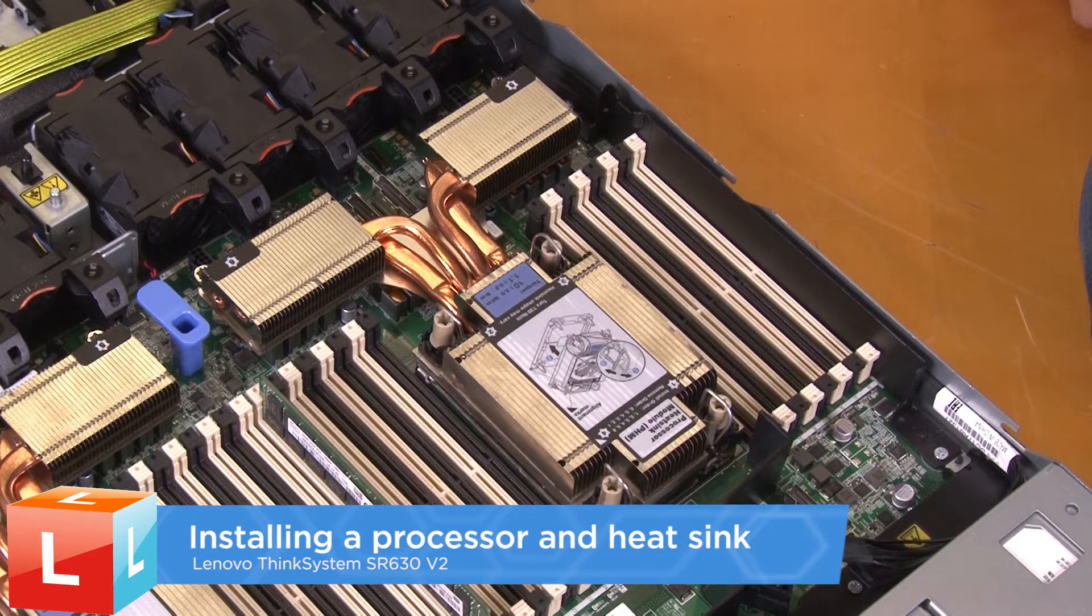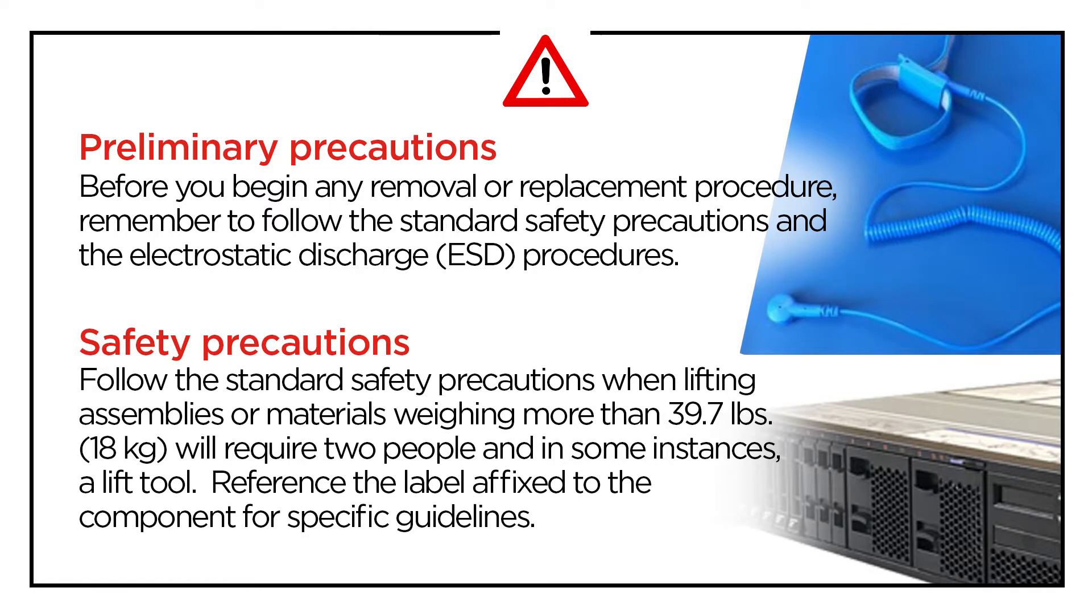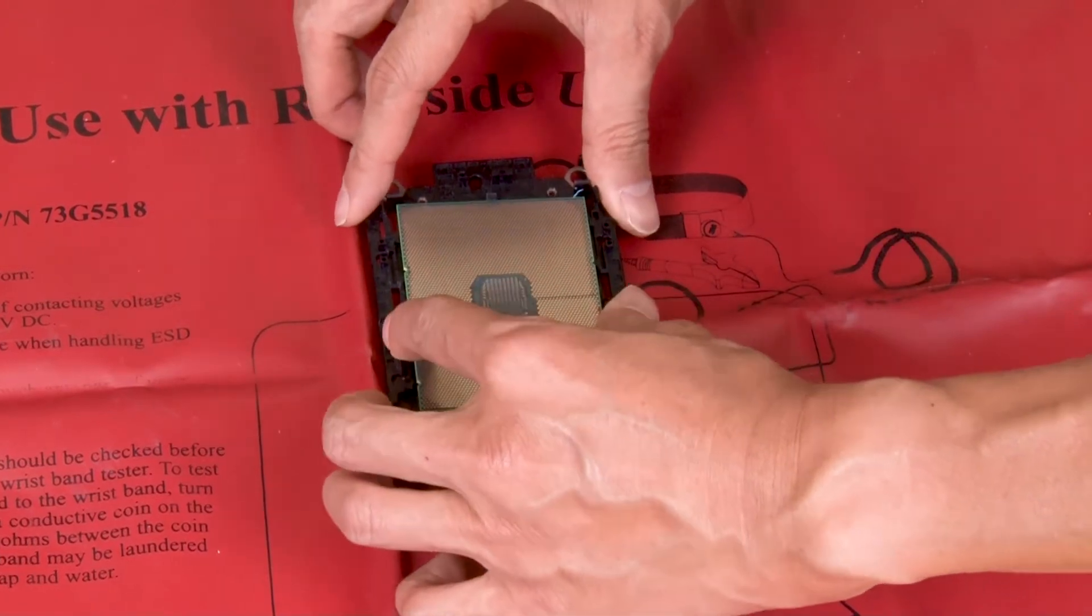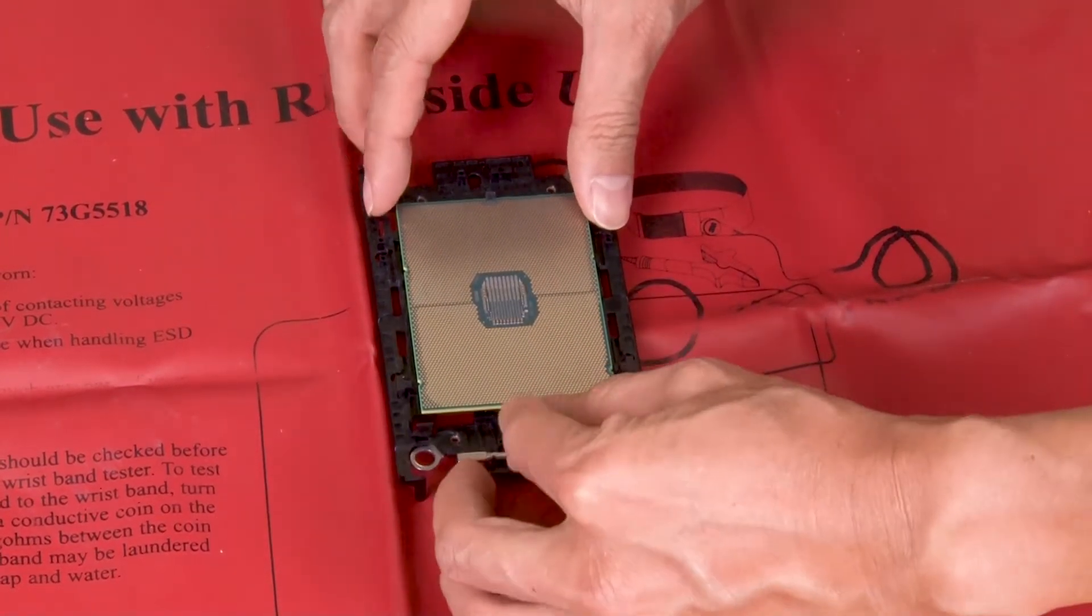Installing a Processor and Heatsink. Press the processor down to secure the unmarked end under the clip on the carrier.